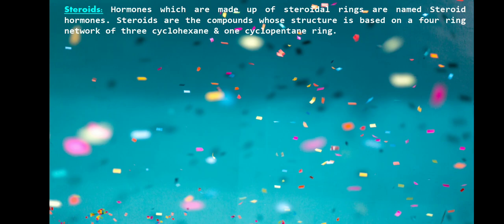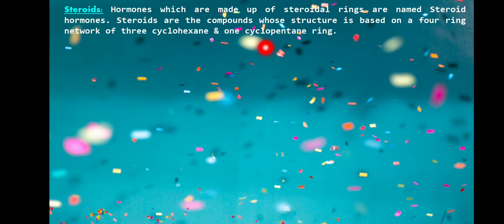The next class is steroidal hormones. These are made up of steroidal ring structures — compounds whose structure contains four fused rings: three cyclohexane rings and one cyclopentane ring. This fusion of three cyclohexane and one cyclopentane ring is called a steroid, and hormones containing this structure are called steroidal hormones.